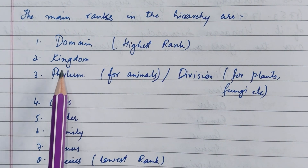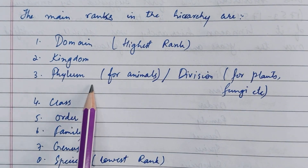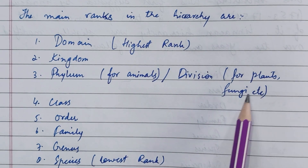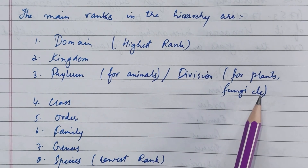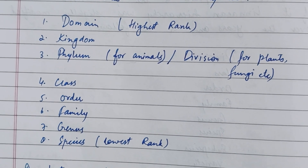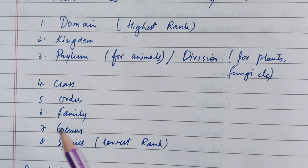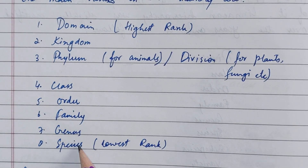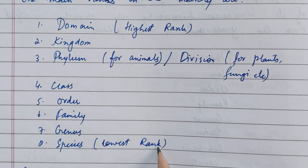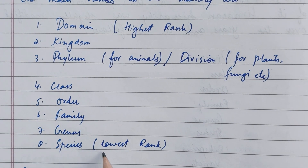The main ranks in the hierarchy are: Kingdom; Phylum for animals and Division for plants, fungi, etc.; Class; Order; Family; Genus; and finally Species. Species is the lowest rank, defined as a group of same individuals which can interbreed among themselves.